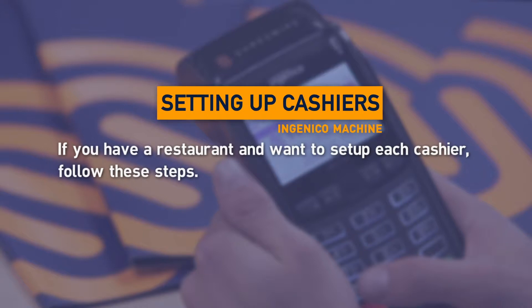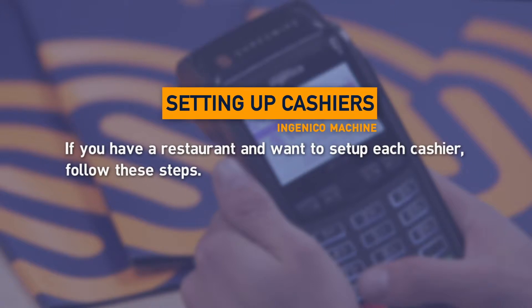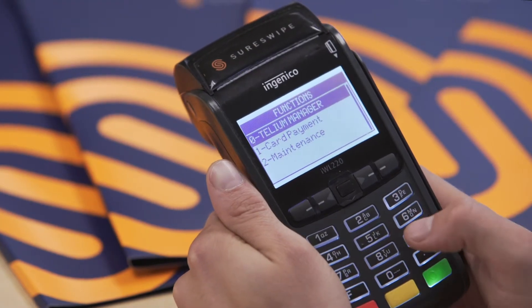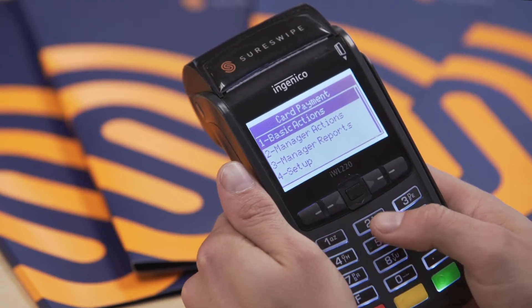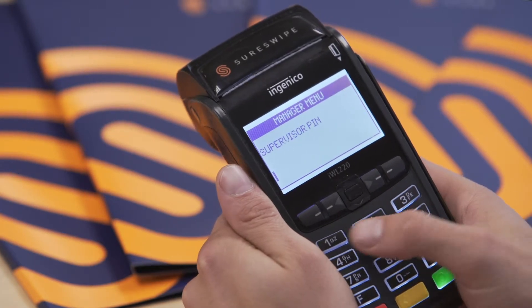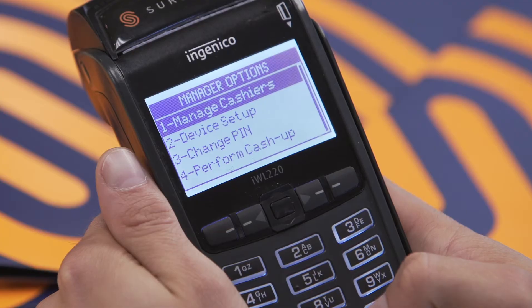Setting up cashiers on the Ingenico machine. Press the F button on the keyboard, then press 1 for card payments. Press 2 for manager actions and enter the manager PIN, then press the green button to confirm.